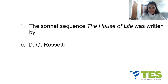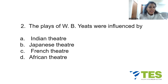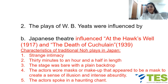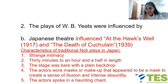Let's move on to question number two. The plays of W.B. Yeats were influenced by — your options are: A. Indian theater, B. Japanese theater, C. French theater, or D. African theater. The answer is B, Japanese theater, specifically called Noh theater — N-O-H. Japanese Noh theater influenced modernist literature. Yeats was introduced to Noh by two of his friends, Ezra Pound and Ernest Fenollosa.